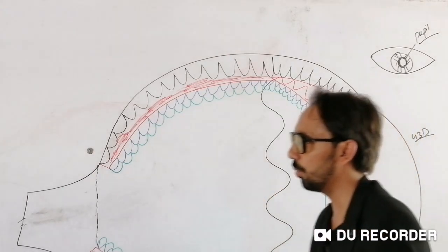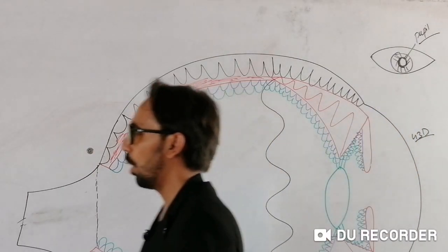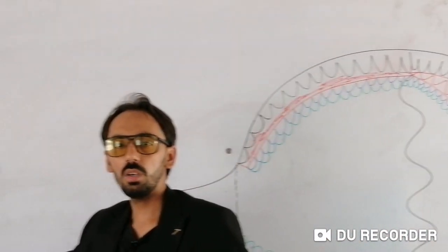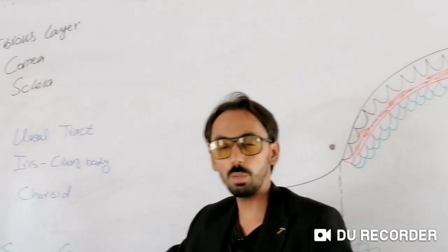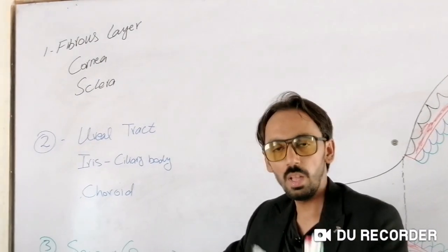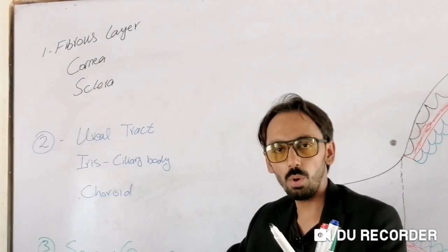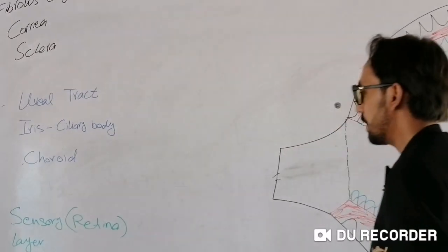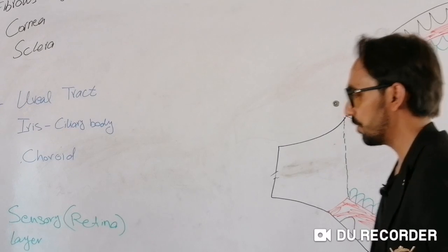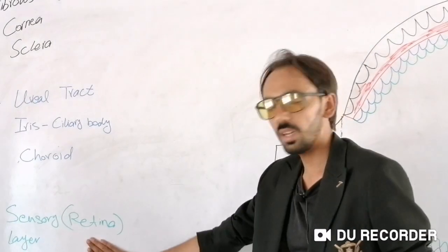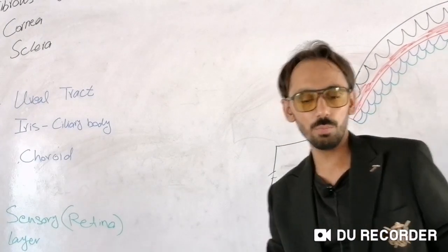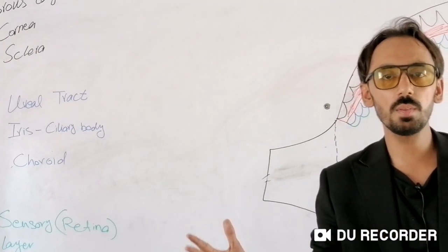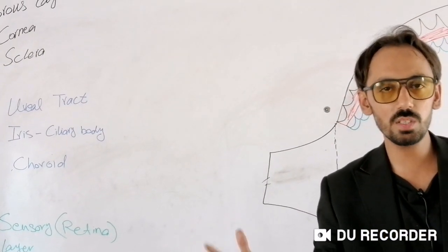We have now discussed the second layer, the uveal tract. Now we will discuss the sensory layer — the retina — which is the most sensitive and most important layer of the eyeball. The retina has different photoreceptor cells: rods and cones.